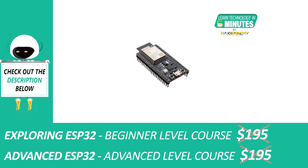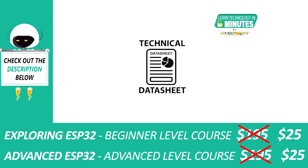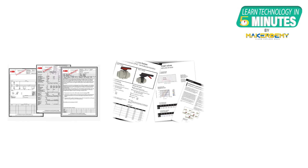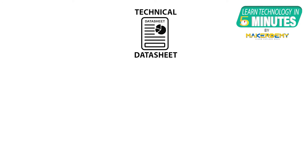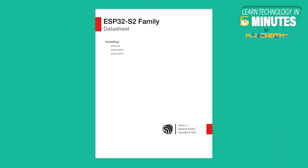Before delving into the decoding process of the ESP32-S2 data sheet, let us first understand what a data sheet is and what it is used for. A data sheet is a document providing the specifications and details of a particular product. Looking at the data sheet of a microcontroller may seem overwhelming, but it is more used as a reference than a manual. Its function is similar to that of using a dictionary to learn a language — one does not necessarily have to learn the entire data sheet, but rather learn how to refer to it to understand the device for their application.